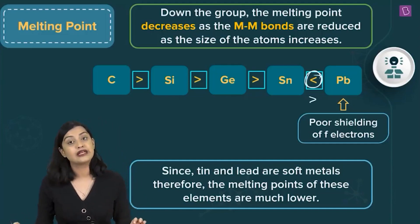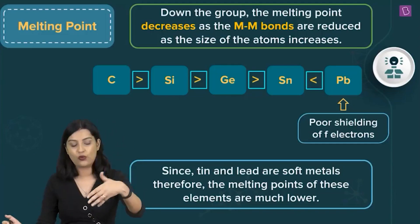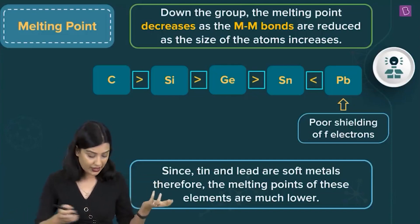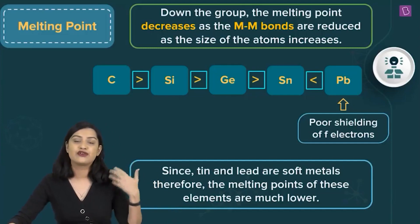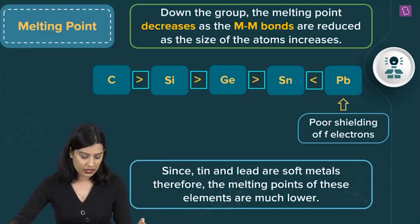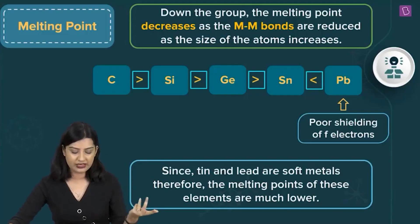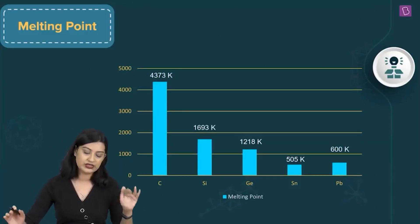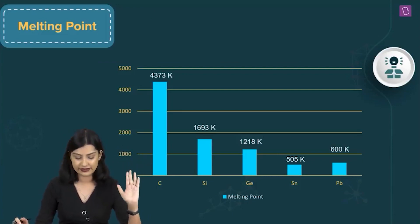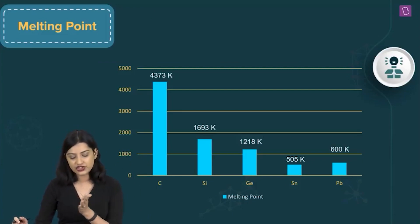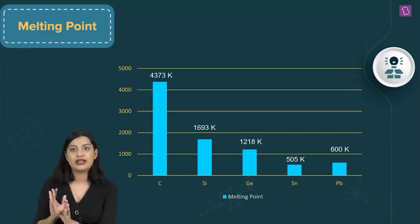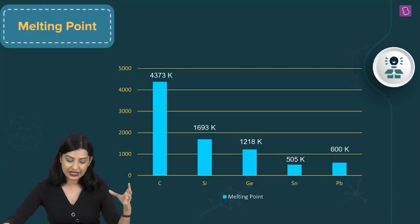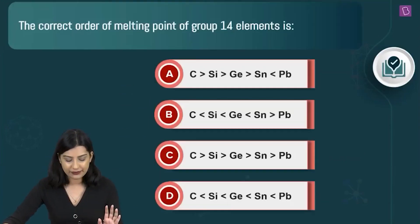However, there is an exception: lead has a greater melting point than tin. This is because the poor shielding of f electrons in lead results in greater effective nuclear charge felt by the outermost electrons. The actual values show carbon at 4373 K (much higher), then silicon and germanium in a similar range, tin lower, and lead at approximately 600 K — slightly higher than tin.